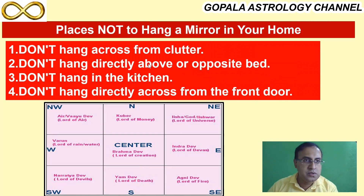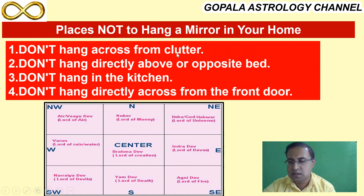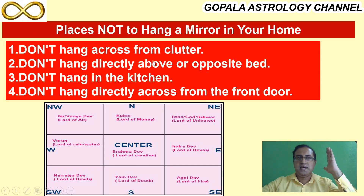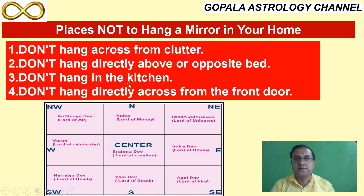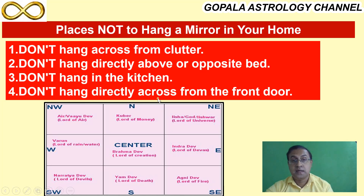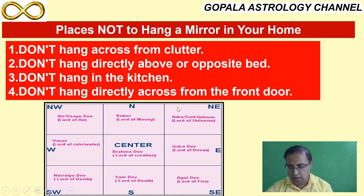Here is a summary of today's video — four key points. First, don't hang a mirror across clutter or facing a dirty area outside the window. Second, do not hang a mirror exactly opposite to the bed. Third, never place any mirror in the kitchen — especially near the cooking fire, as it multiplies the fire's effect on the person cooking. Fourth, never hang a mirror in front of the main door, as whatever good energy comes in gets reflected back.